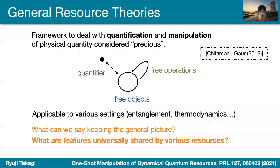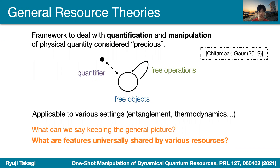This talk is about the general resource theories. The resource theories are the general framework to deal with the quantification and manipulation of physical quantities that are considered precious in the given settings. These include three major concepts such as free objects, free operations, and resource quantifiers. Basically, we are interested in how to quantify the amount of resources and how to discuss the manipulation only using the given free resources, such as free operations or free objects. This framework itself is quite general and applicable to various settings, including entanglement theory or thermodynamics. What we are interested in here is the general feature that we can extract from this framework.